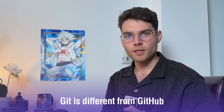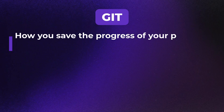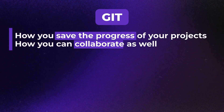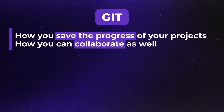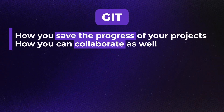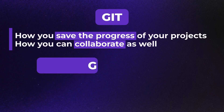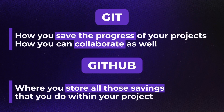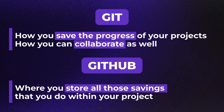Git is different from GitHub. Git is basically how you save the progress of your projects and how you can collaborate as well. And GitHub is where you store all those savings that you do within your project.